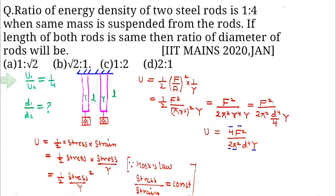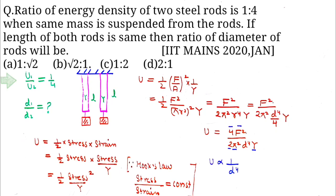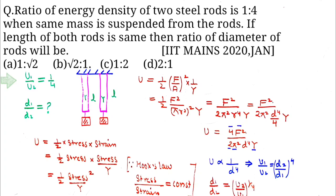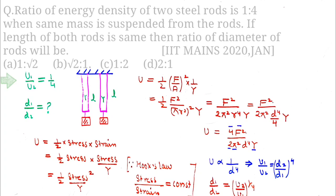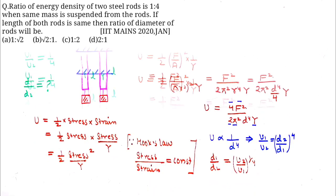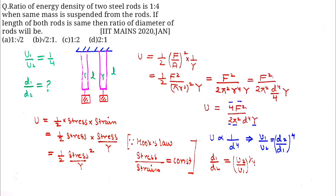Since force, 2 pi, and Young's modulus are constant according to the question, the energy density is inversely proportional to diameter to the power 4. So you can write u1 by u2 is equal to d2 by d1 to the power 4. According to the question, u1 by u2 is 1 by 4.